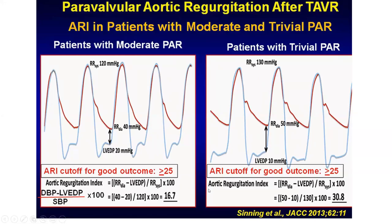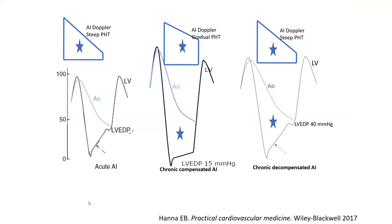In acute and chronic decompensated AI, the massive approximation of aorta and LV creates a triangle shape in that area — a dangerous triangle — where aorta and LV touch each other, which we call diastasis. You also notice attenuation of the dicrotic notch on all these tracings, especially in acute AI. In chronic AI, the dicrotic notch may be slightly preserved as the aorta regains compliance.